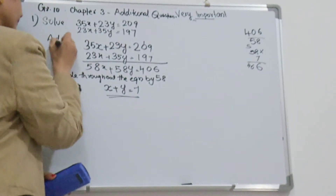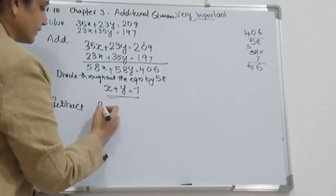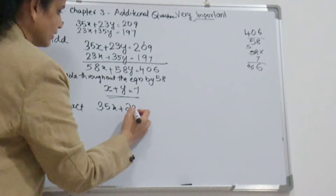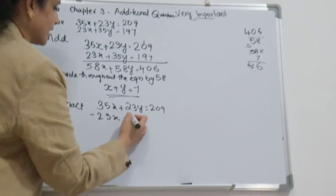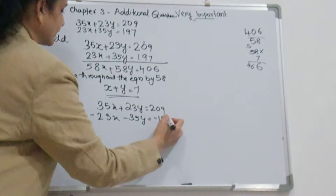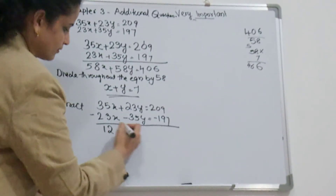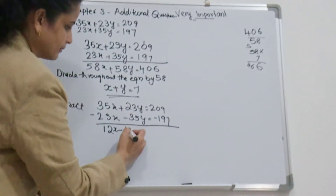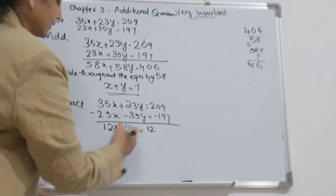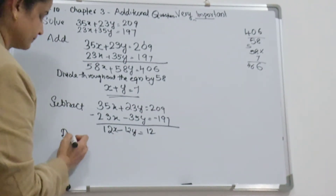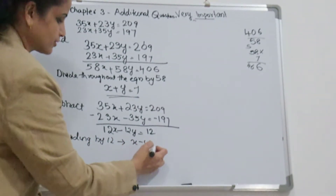Next, subtract the second equation from the first. Subtracting 23x plus 35y equal to 197 from 35x plus 23y equal to 209 gives 12x minus 12y equal to 12. Dividing by 12, you get x minus y equal to 1.